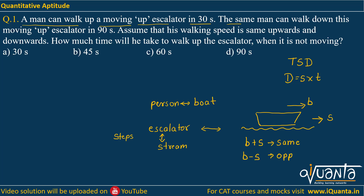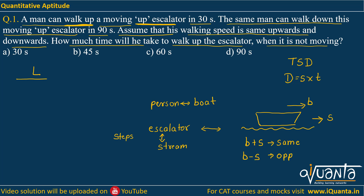The first question: a man can walk up a moving-up escalator in 30 seconds, and walk down this same moving-up escalator in 90 seconds. Assume his walking speed is the same upwards and downwards. Let the distance be l, speed of man be m, and speed of escalator be e. When the man walks up and the escalator moves up, they move in the same direction, so the net speed is m plus e, covering distance l in 30 seconds.